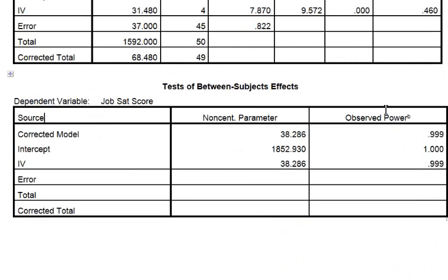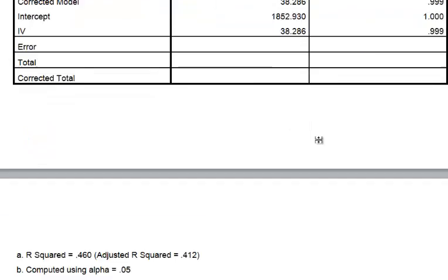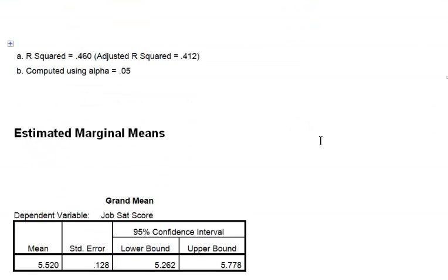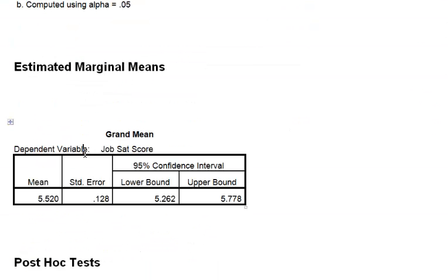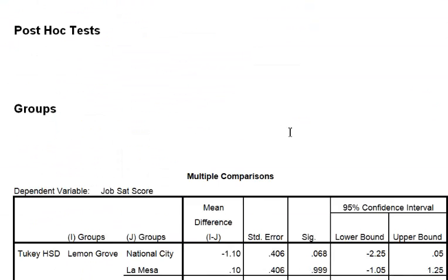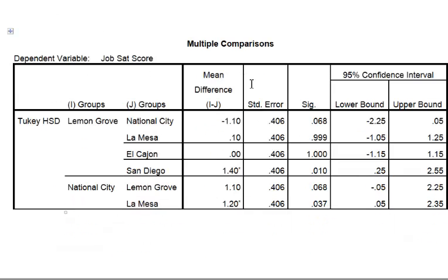Power is important — the study was good, you should report power. We don't need the grand means. The post hoc test was appropriate because you did have a significant difference and you're not sure between which stores.